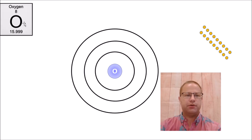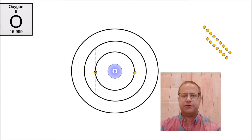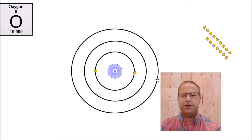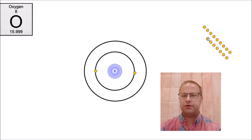Now let's take a look at oxygen. Oxygen has an atomic number of eight, which tells us the number of protons as well as the number of electrons. Looking at the first shell, we take two of those electrons and assign them to it — remember the first shell can only hold two electrons. That leaves six electrons remaining. The second shell can hold a maximum of eight electrons, so we don't need a third shell here. Eight minus two is six electrons to place in the second shell.